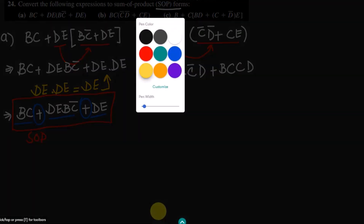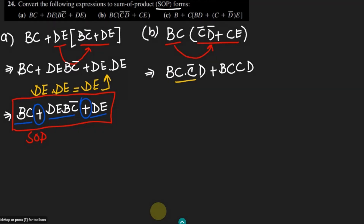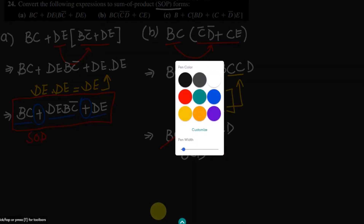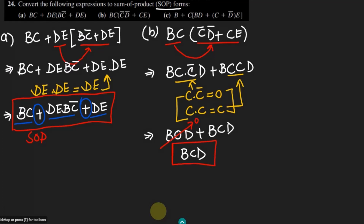Here we have different terms because we have C dot C prime and C dot C as well. We know that according to Boolean's algebra, C dot C prime is always equal to 0 and C dot C is always equal to C. Applying these, I will get B times 0 times D and here we will have BCD. By using this, it will become 0 because 0 multiplied by anything is 0, and at the end we get BCD. This is the final expression and the answer of part B.